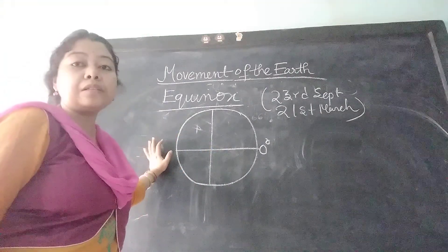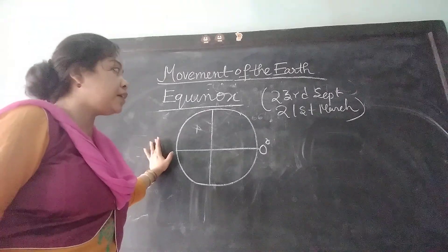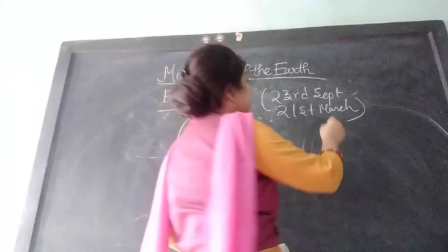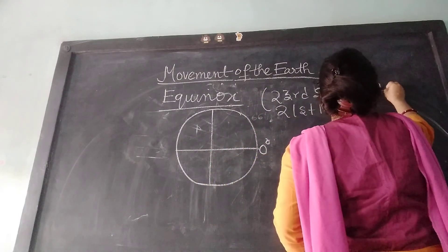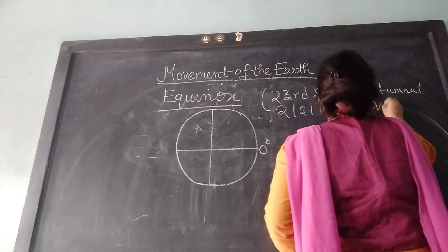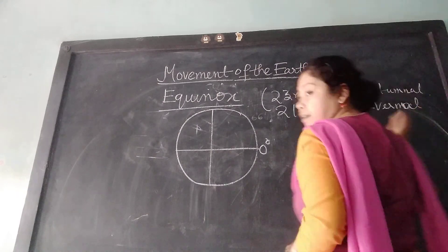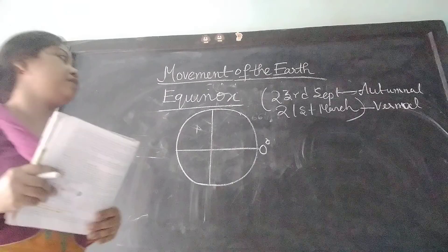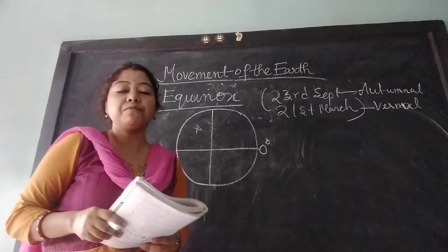The word equinox means equal light. On 23rd September, it is known as autumnal equinox, and 21st March is known as vernal equinox. These two are very important.